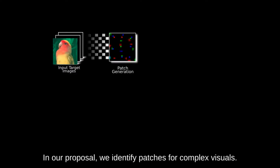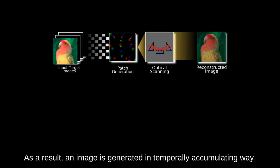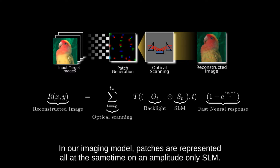In our proposal, we identify patches for complex visuals. Identified patches are scanned over a surface using an optical scanner. As a result, an image is generated in a temporally accumulating way. In our imaging model, patches are represented all at the same time on an amplitude-only SLM.